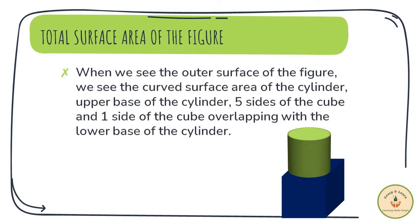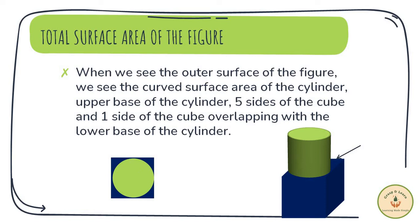When we see the outer surface area of the figure, we see the curved surface area of the cylinder, the upper base of the cylinder, five sides of the cube, and one side of the cube that is overlapping with the lower base of the cylinder. Thus, from the outside, the surface visible to us consists of the base of the cylinder subtracted from the side of the cube, as shown in the figure.